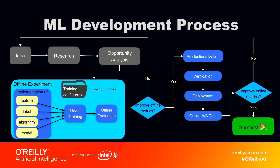We then have offline evaluation to evaluate the model based on the past few days or few weeks of offline data. If the offline evaluation improves metrics, then we can go to the online deployment process — productionalize the model, verify the model, deploy the model, and do online A/B tests, gradually ramping up to the majority of member experience.